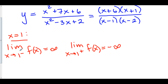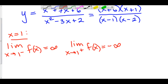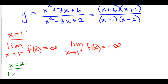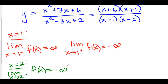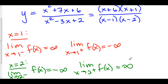Let's do the same analysis for x equals 2. We will first take the limit as x approaches 2 from the negative side of f of x. From the negative side, let's choose 1.9: positive, positive, positive, negative — so this is going off to negative infinity. Now let's see what happens when we take the limit as x approaches 2 from the positive side. Let's choose 2.1: positive, positive, positive, positive, positive — this is going off to positive infinity.